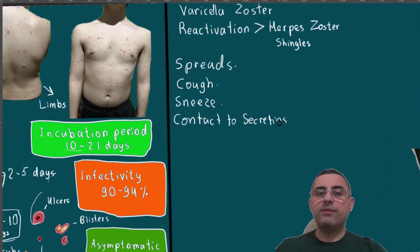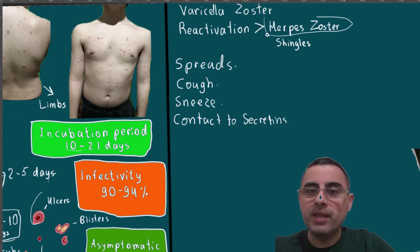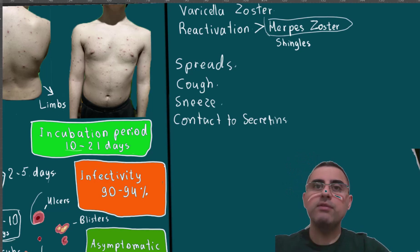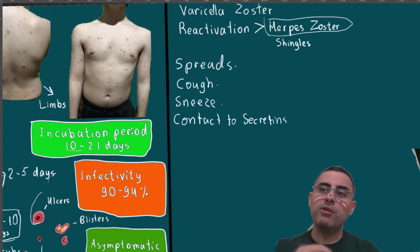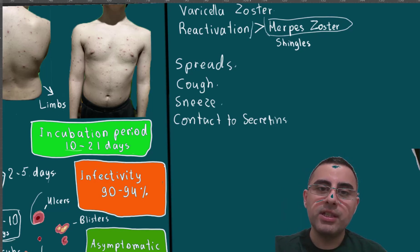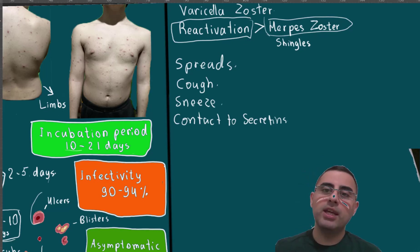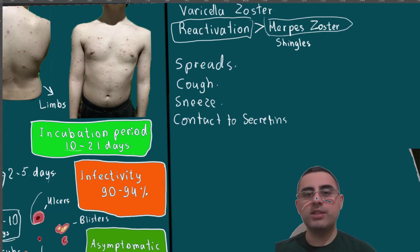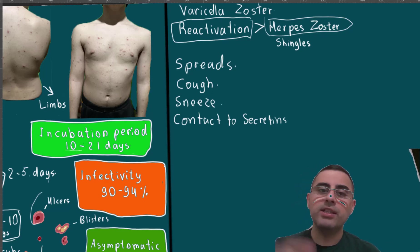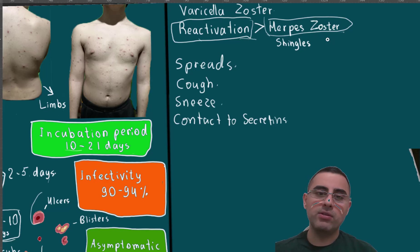An interesting fact: herpes zoster, also known as shingles, is a type of painful rash caused by the same varicella zoster virus. After a chickenpox infection, the varicella zoster virus stays dormant in the body. If a person's immune system becomes weakened, the virus can reactivate and cause herpes zoster, which presents with a rash and localized pain — but it is not chickenpox.